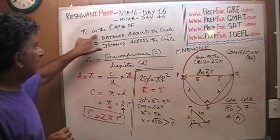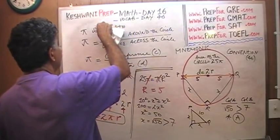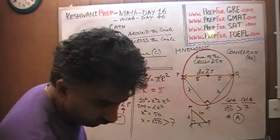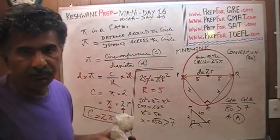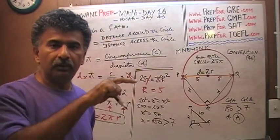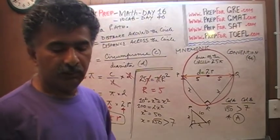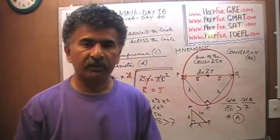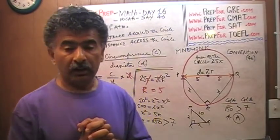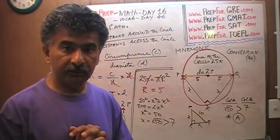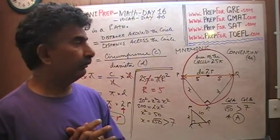Pi is a ratio — a ratio of the distance around the circle to the distance across the circle. That's all you have to understand. The rest is downhill from there: the formula for circumference will automatically emerge. I hope you found it interesting and useful, and that now you can actually articulate what pi is if somebody asks you.